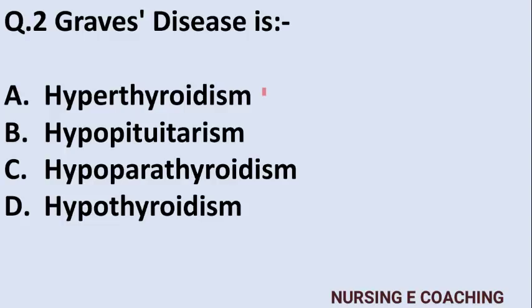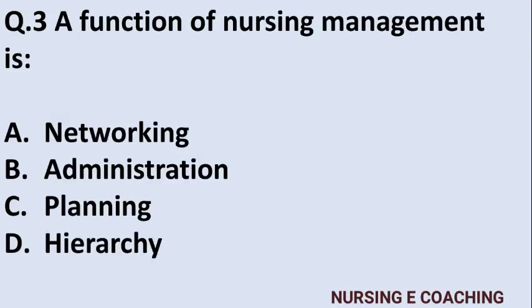Question 2: Grave's disease is — Option A: hyperthyroidism, Option B: hypopituitarism, Option C: hypopituitarism, Option D: hypothyroidism. Answer is Option A — hyperthyroidism.